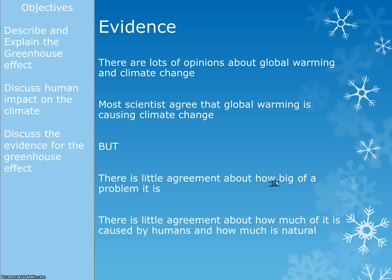The last thing linked to the greenhouse effect topic is the idea of debate within the scientific community. There are loads of opinions on global warming and climate change. Most scientists do agree that global warming is causing climate change — that the effects of greenhouse gases in our atmosphere are causing the climate to change. However, there is still disagreement about how big a problem that is, or if it is in fact a problem at all, and also about how much of the climate change is due to human impact versus how much of it is natural.